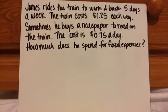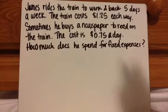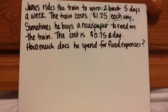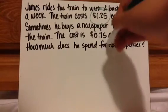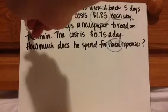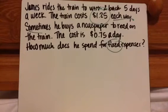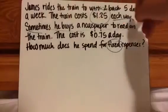Riding the train to work and back five days a week at $1.25 each way — it doesn't say anything about it being different, or sometimes he goes and sometimes he doesn't. So those are my fixed expenses. It says sometimes he reads the newspaper on the train, and that is 75 cents a day. That's by choice, so that's a variable expense. We don't need to worry about that for this question.